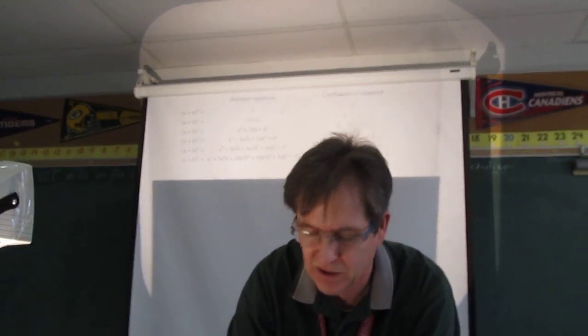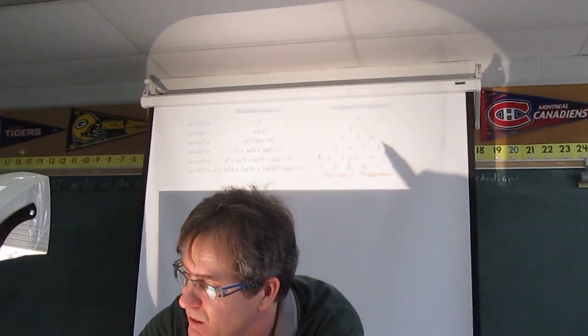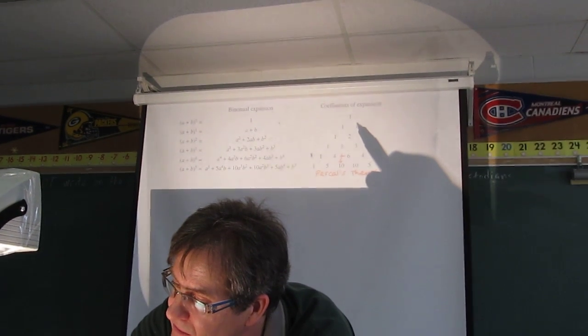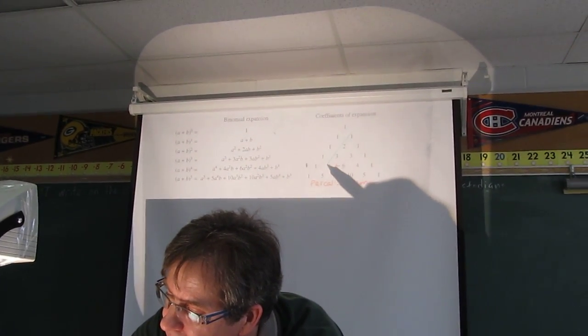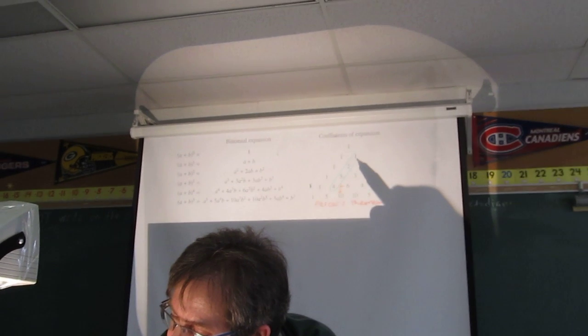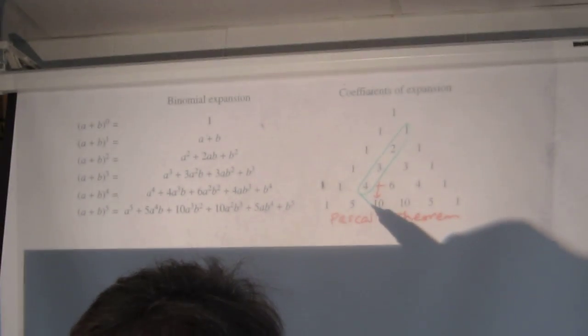There's another pattern, which is famous for Canadians, called the hockey stick pattern. If you take, for example, any set of numbers on a diagonal, that's the blade of the hockey stick, and then go on an angle like this.